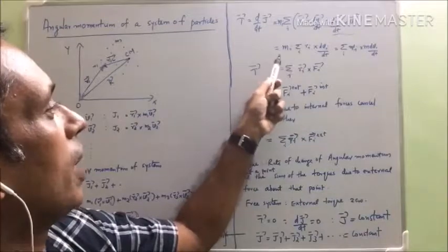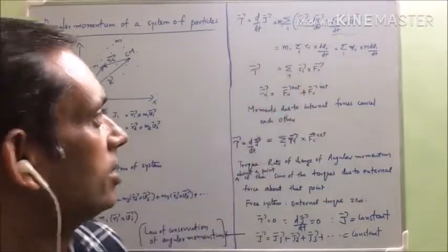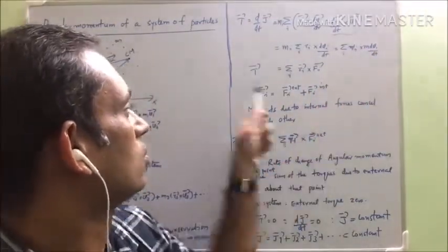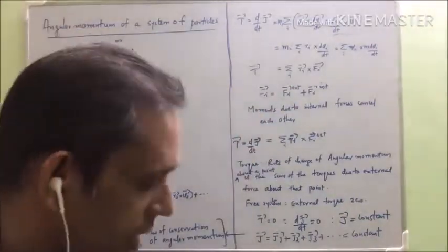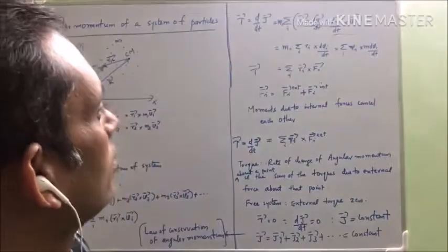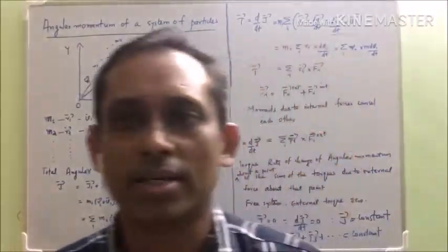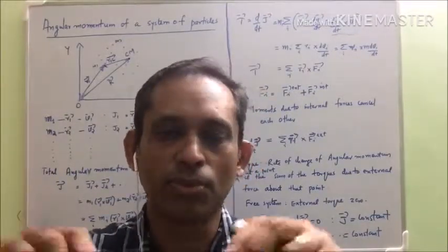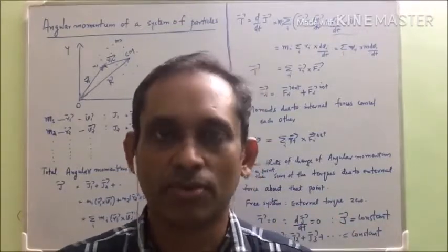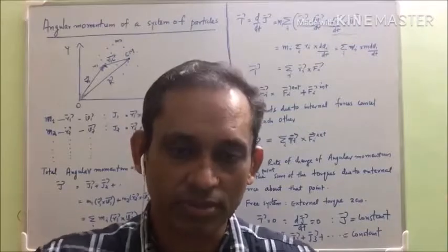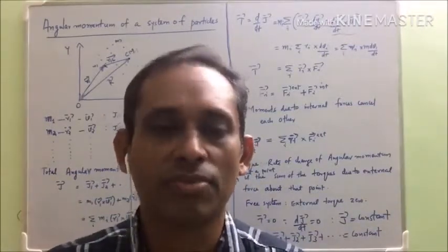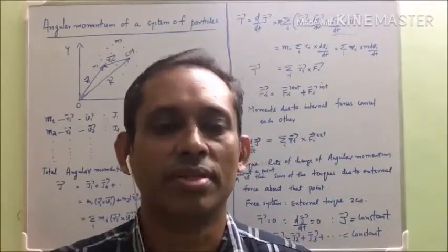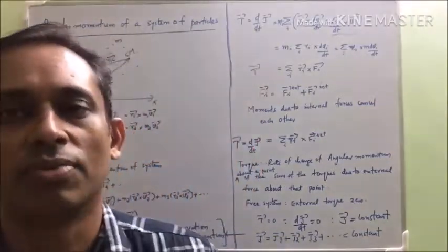So what we have is: sigma i, mi, ri cross dvi/dt. Since dvi/dt times mi is the force fi, the torque equals sigma i, ri cross fi. Now, the force fi acting on any particle in the system has two components: the external force and the internal force. The other particles in the system exert internal forces on each particle, which in turn exerts an equal and opposite internal force on them.